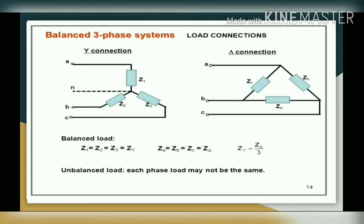The first diagram is for Y connection and the next diagram is for delta connection. For both systems — star as well as delta — in balanced load, Z1 is equal to Z2 is equal to Z3. For unbalanced load, each phase load may not be the same.